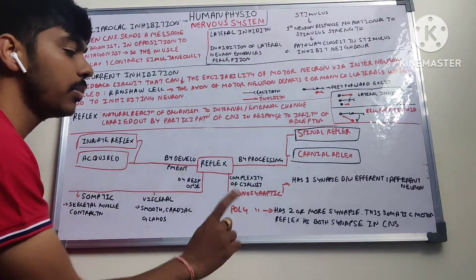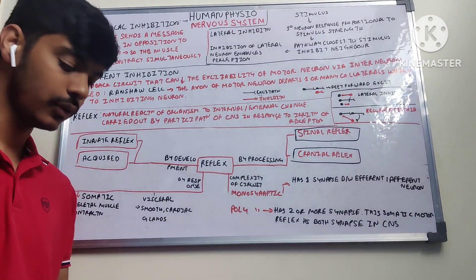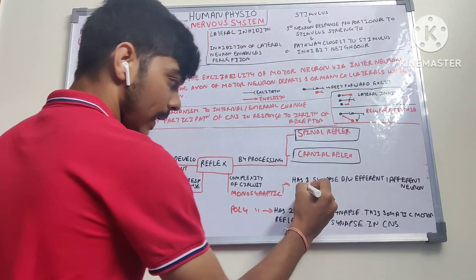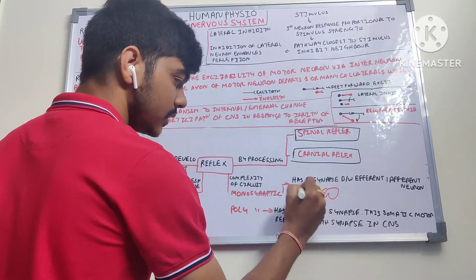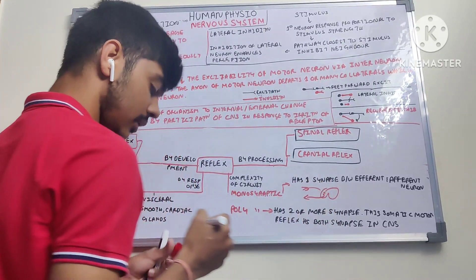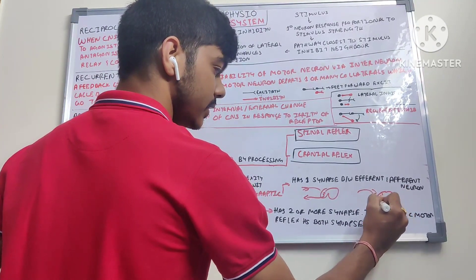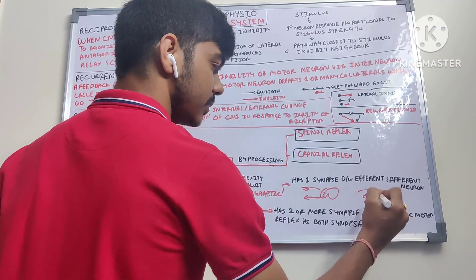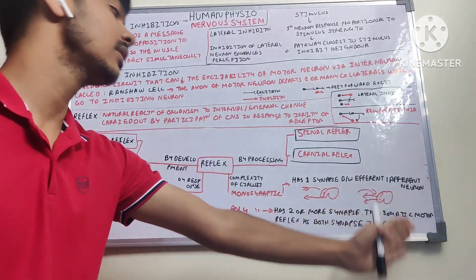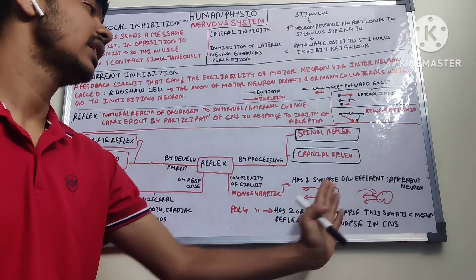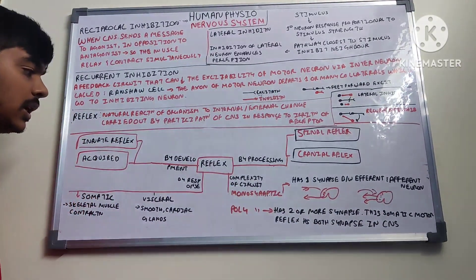By complex circuit, reflexes can be monosynaptic or polysynaptic. Monosynaptic has one synapse between different afferent and efferent neurons — the stimulus passes through the spinal cord via a single synapse. In a polysynaptic reflex, there are two or more synapses — many centers transmit responses to various places. Somatic motor reflexes have both synapses present within the central nervous system.